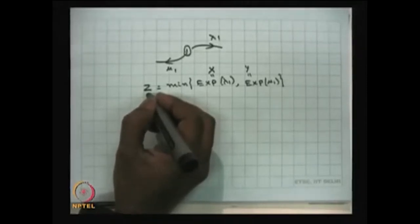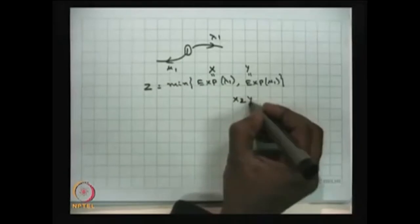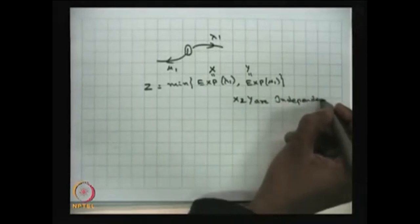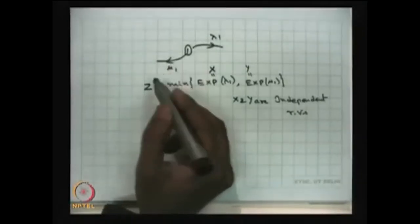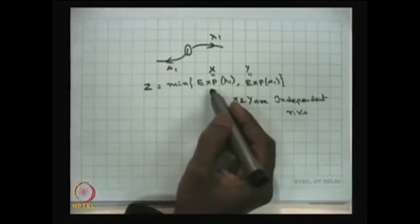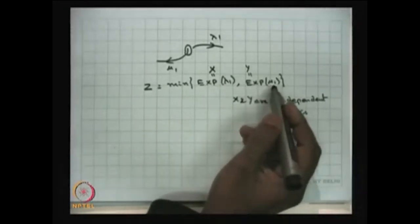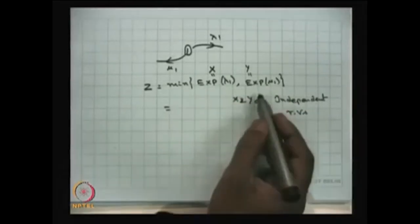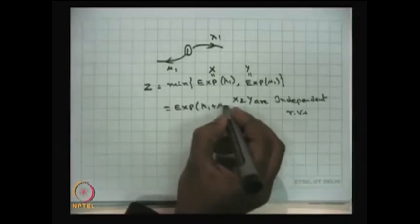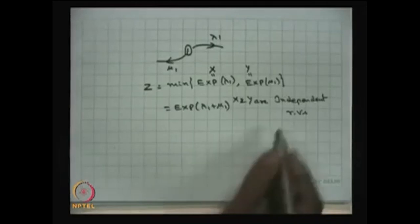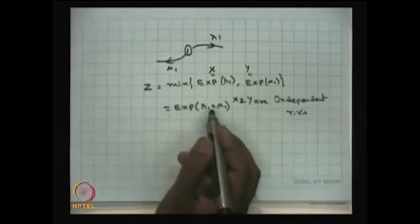The waiting time distribution is exponentially distributed, which follows from the minimum of two independent exponential random variables. Here X and Y are independent random variables — both exponentially distributed. Therefore the time spent in state 1 before moving into any other state is the minimum of the random variable with exponential parameter lambda-1 and the random variable with exponential parameter mu-1. The minimum of two independent exponentials is also exponential with parameter lambda-1 plus mu-1.